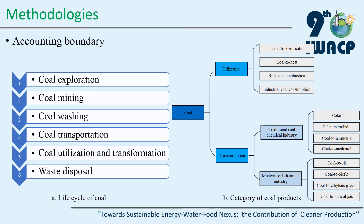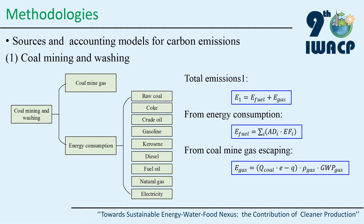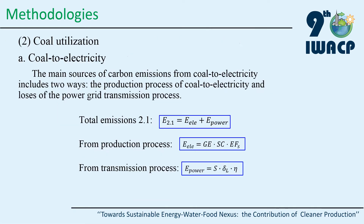Coal can be transformed into a variety of coal products through different technologies. Figure B shows major coal products, such as coal to electricity and coke. I will now interpret the sources and accounting models for carbon emissions from different processes and products. In the process of coal mining and washing, carbon emission sources involve coal mine gas escaping and energy consumption. There are four forms of coal utilization.